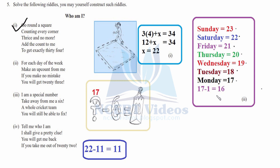Riddle three: I am a special number. Take away from me a six — a whole cricket team — and you will still be able to fix. A whole cricket team means 11 players. So the question is: what number, when 6 is subtracted, gives 11? By inspection, 17 minus 6 equals 11. So 17 is the special number.